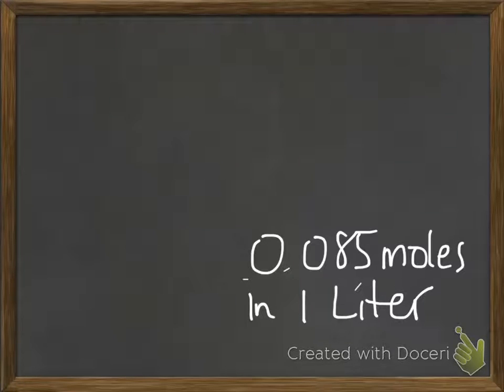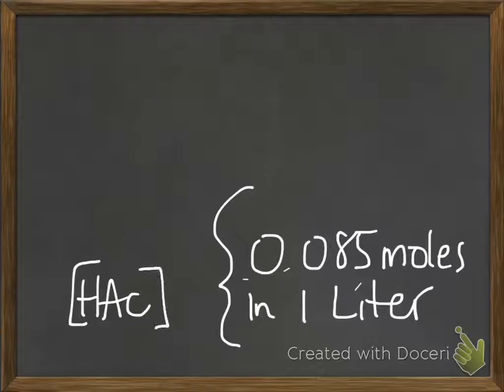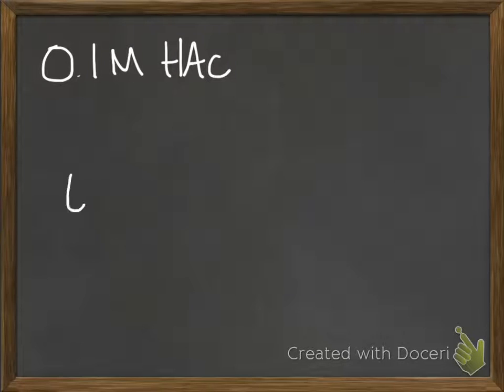So you know you have 0.085 moles of acetic acid in 1 liter. But it's asking you how much of the 0.1 molar solution of the acetic acid would you add to begin with. So this is what you started off with.